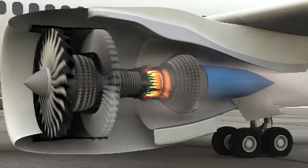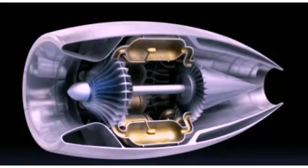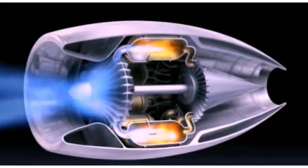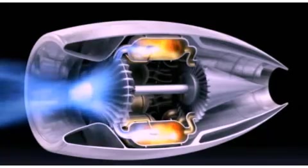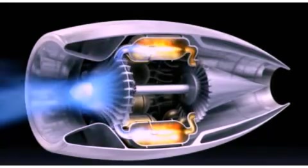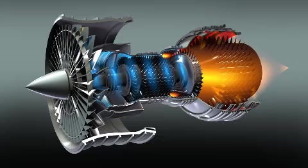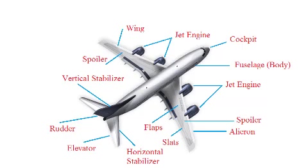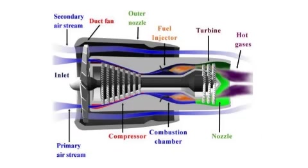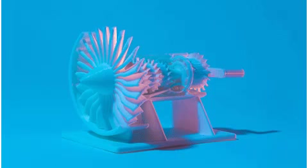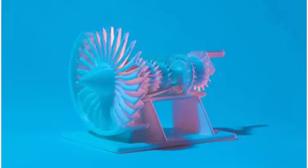Working of a jet engine: The compressor sucks the air and compresses it. This highly compressed air is then forced into the combustion chamber. Multiple nozzles inject fuel into the air, and an igniter, similar to a spark plug, causes the air to catch fire. The fuel burns with oxygen present in the compressed air, producing hot expanding gases. These gases are passed through the turbines, which causes the blades to rotate. This turning of the turbine also rotates the shaft to which it is fixed, and the same shaft in turn rotates the compressor. This is why we need a turbine after the combustion chamber section.